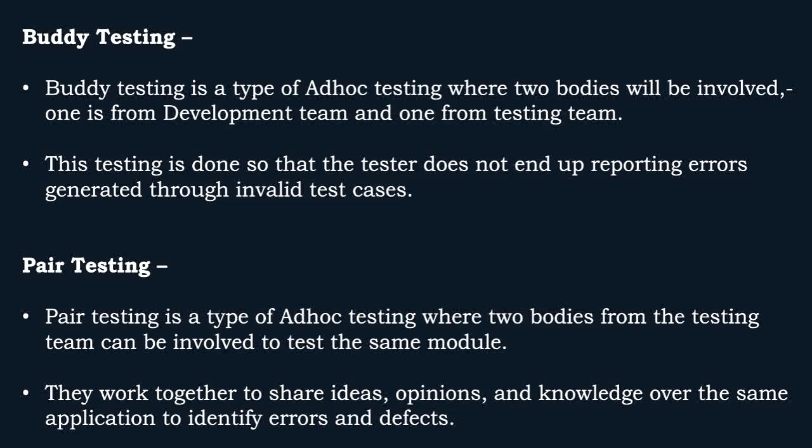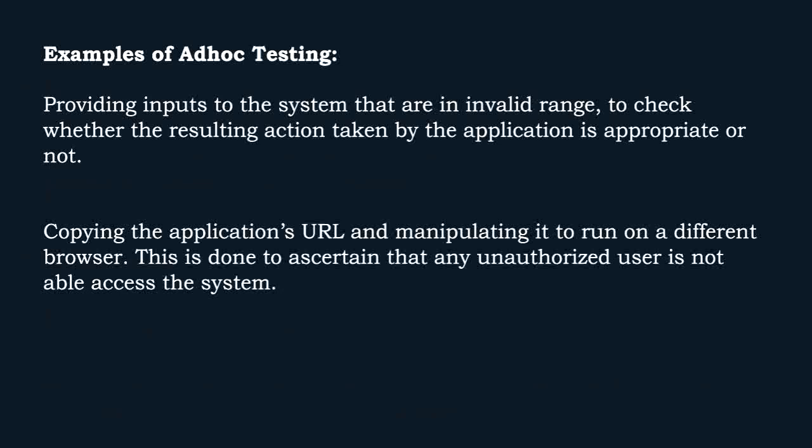Next is pair testing. Pair testing is a type of ad hoc testing where two buddies from the testing team are involved to test the same module. They work together to share ideas, opinions, and knowledge over the same application to identify errors and defects. The major difference between buddy testing and pair testing is that in buddy testing, one from the development team and one from the testing team are involved, whereas in pair testing, both are testers.